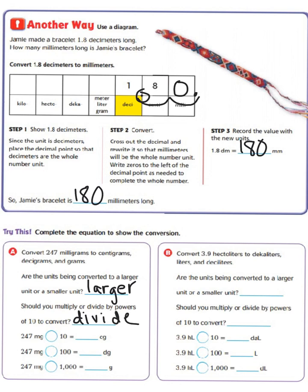So 247 milligrams divided by 10 equals 24 and 7 tenths centigrams. 247 milligrams divided by 100 equals 2 and 47 hundredths decigrams. And 247 milligrams divided by 1000 equals 0.247 grams.